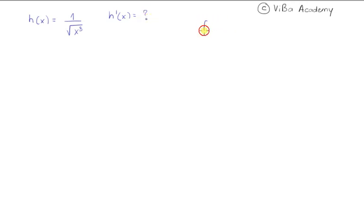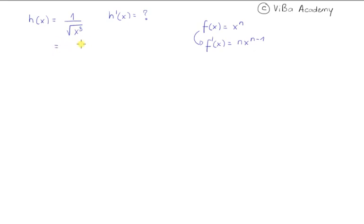I'll write the power rule one more time so that you know what I'm talking about: if a function is expressed in the form f of x equals x raised to n, its derivative f prime of x is given by n times x to the power n minus 1 — the existing power becomes a factor and then the power is reduced by 1. When I look at this function, as it stands I cannot just apply the power rule. I first need to express the whole thing as a single power of x. I do that by getting rid of the square root, saying the denominator is x raised to 3 over 2, and since it's in the denominator, I can write the whole thing as x raised to negative 3 over 2.